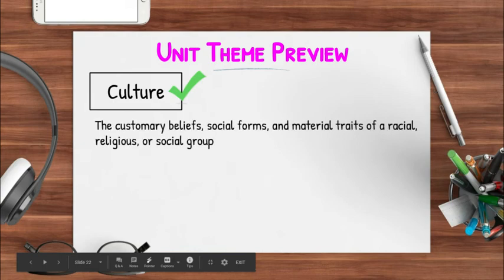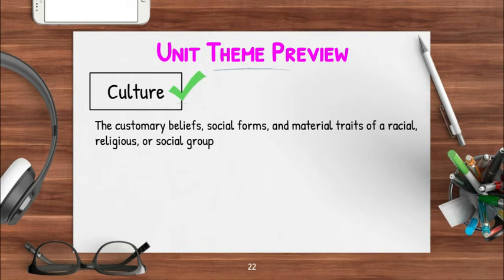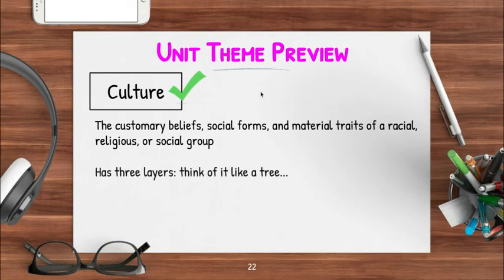Culture is the customary beliefs, social forms, and material traits of a racial, religious, or social group. It's agreed upon by a bunch of people, and it is real — these are established practices that a whole bunch of people have gotten together and said, 'These belong to us. This is part of our culture.' The best way to think about culture is to think of it like a tree.